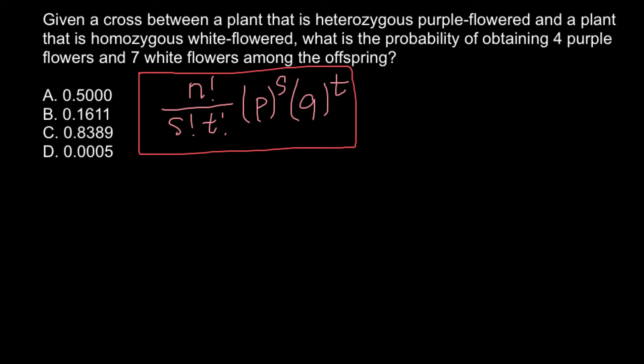Let's apply it to our problem. The total number of plants we have here is 11, so 11 factorial divided by 4 factorial (the total number of purple flowers is 4). To find the probability of purple flowers, we can build a Punnett square. One parent is heterozygous purple flowered — as given in our problem — so let its genotype be capital A, lowercase a.